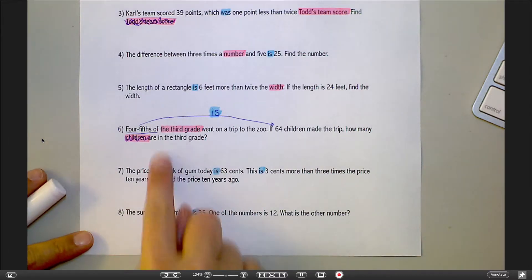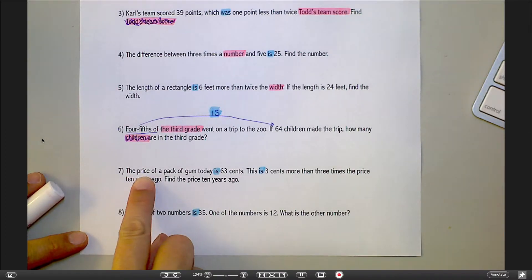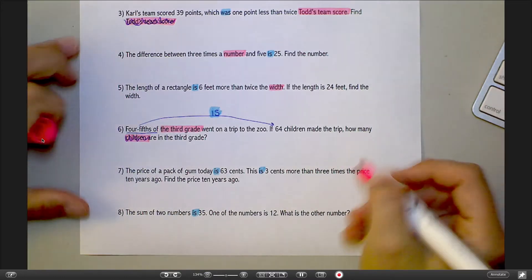Number 7, find the price 10 years ago. Be careful that you don't just go with price because there's two different prices being talked about here. There's the price today and the price 10 years ago. We want the price 10 years ago. That's my variable.